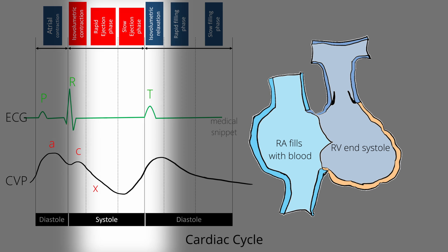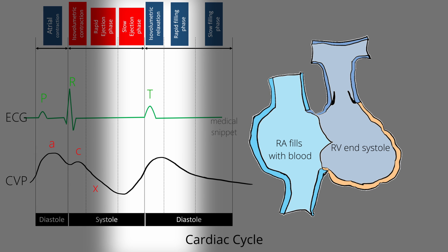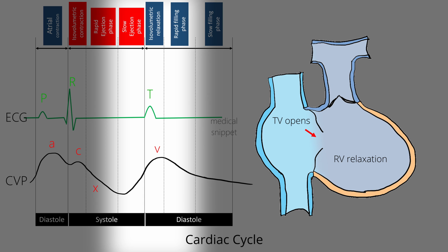As the right atrium begins to fill at the end of ventricular systole, the right atrial pressure increases, causing the V wave in the CVP pressure tracing. It corresponds to the T wave in the ECG. As the ventricle starts to relax, the tricuspid valve opens and right atrial blood enters the right ventricle, so the pressure in the right atrium decreases, causing the Y descent.